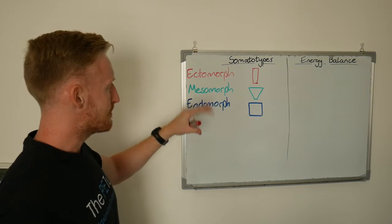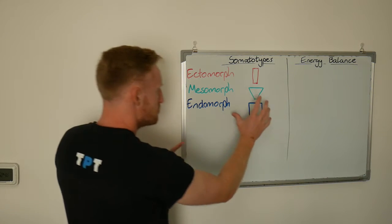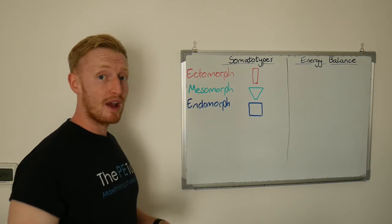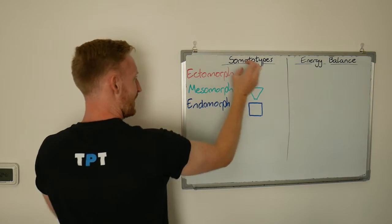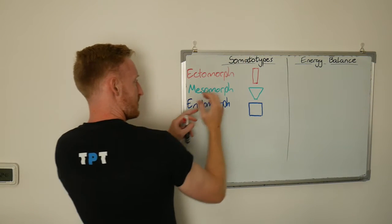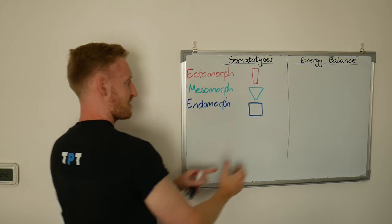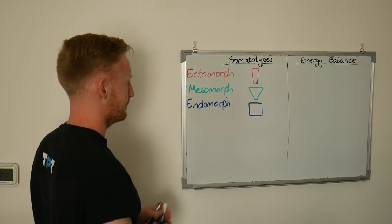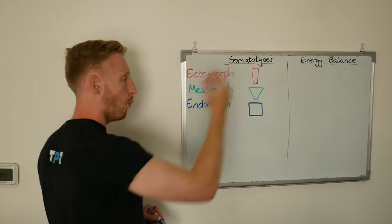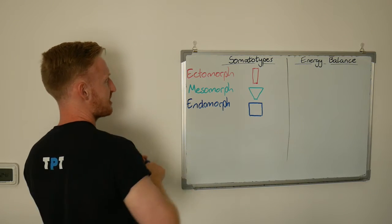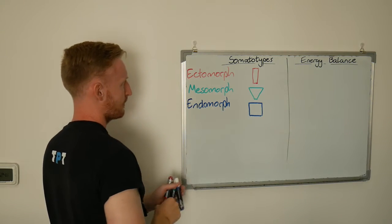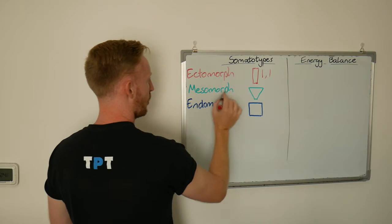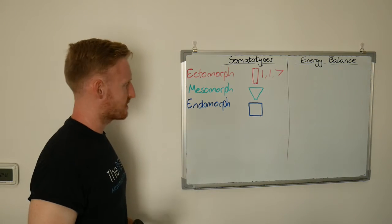So there are three different types and broadly speaking someone is more one than the other. But somatotyping gives us a way to actually measure someone's linearity or length, someone's muscularity or mesomorph, and someone's fatness, their endomorph measure. The measure is on a scale of 1 to 7, 7 being the extreme, 1 being the absolute lot. So let's say someone was an extreme ectomorph, we would consider them to be 1 on endomorph, 1 on mesomorph and 7 on ectomorph.